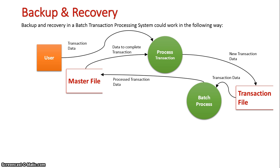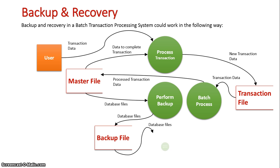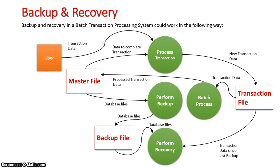To back up this system, we take the data from the master file and perform the backup, which then goes into a backup file. If the system goes down, to restore we obtain the data from the backed-up file, but also the data still sitting in the transaction file that has not yet been batch processed. That gives us all our data back for a full system recovery, and this data is then entered back into the master file.